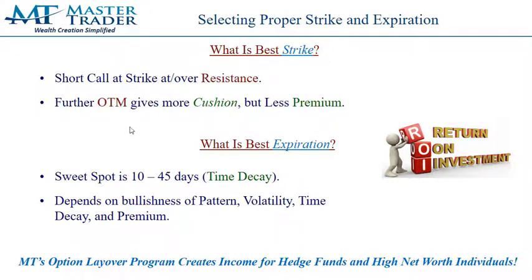We like to short the strike just above resistance. You could go further out of the money, which gives you more cushion for the stock to rise, but you're getting less premium for that. It just depends on the trader's risk-to-reward profile. The best expiration for this covered call — the option layover monthly service — is 10 to 45 days.